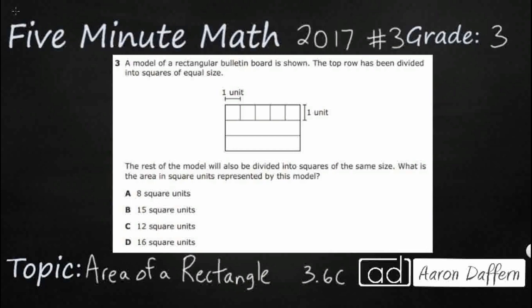So we have a problem that seems like it was getting started here, but they didn't quite finish it. There's a bulletin board, and they're putting little squares across. It looks like we've got three different rows of squares, but they didn't quite finish putting all the squares across.